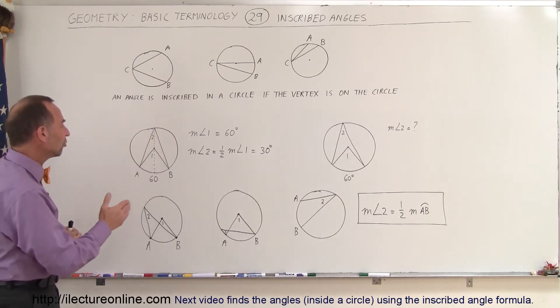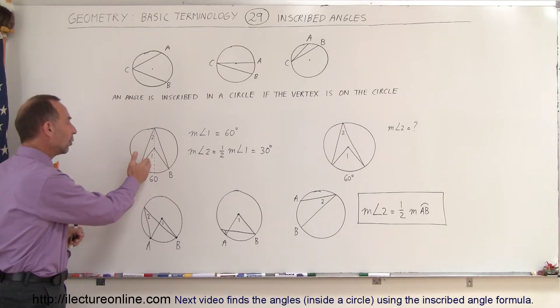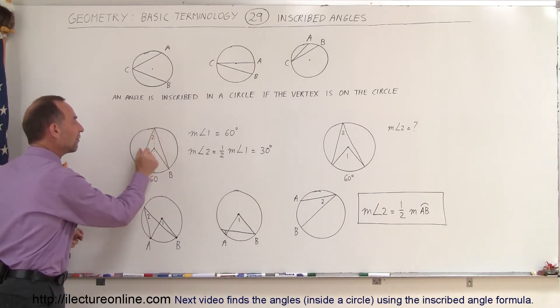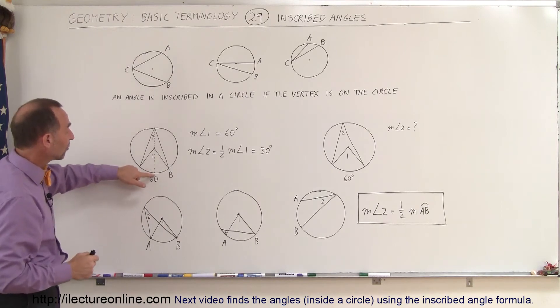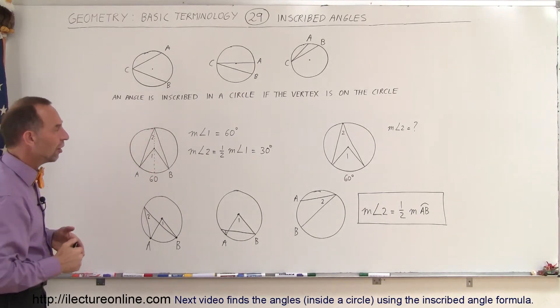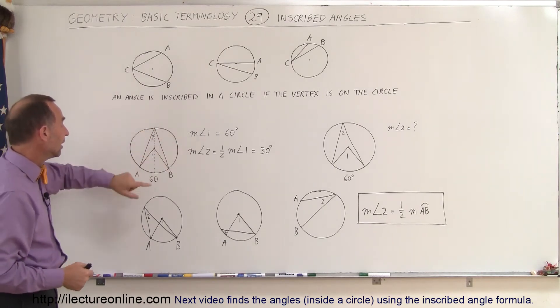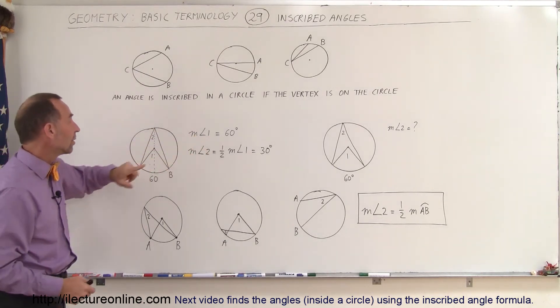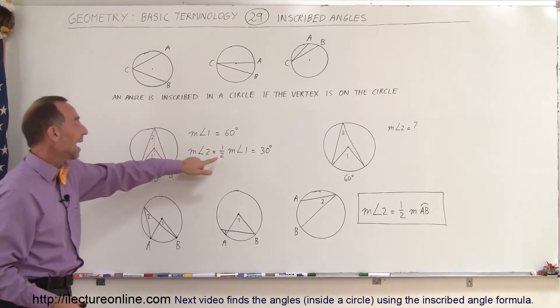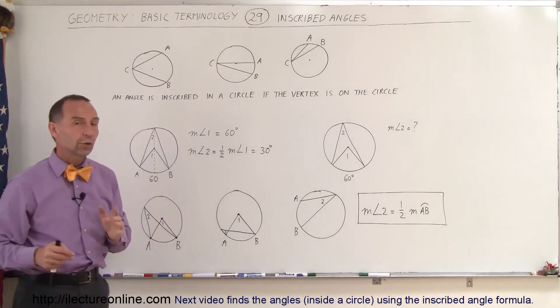So it seems to make sense when you start comparing the angles, angle 1 and angle 2, that you would think that angle 2 must be half the size of angle 1 because the distance from there to there is twice as far. And that is indeed the case. This angle is half this angle. We can write that here. If the measure of angle 1 is 60 degrees, then the measure of angle 2 must be half that and therefore only 30 degrees.